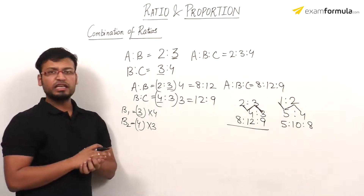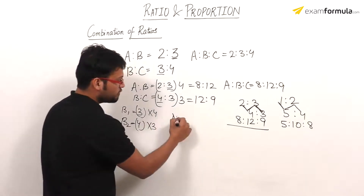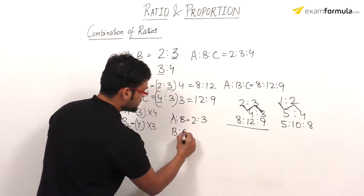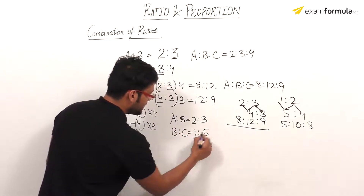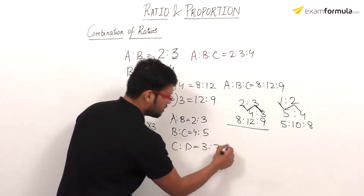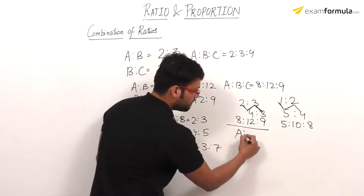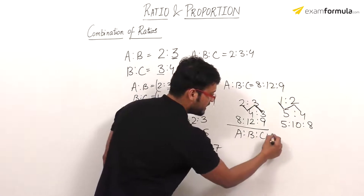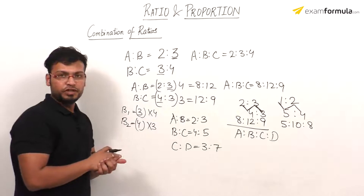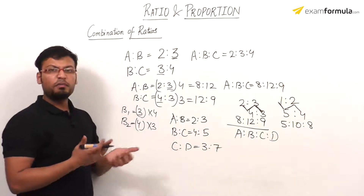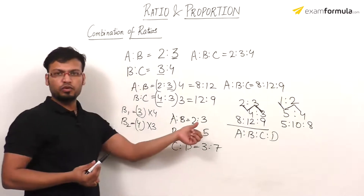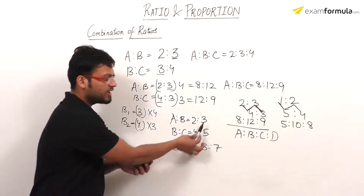Now I will give an example with 4 numbers. A ratio B is given as 2 ratio 3, B ratio C is 4 ratio 5, and C ratio D is 3 ratio 7. I am asked for the combined ratio A ratio B ratio C ratio D. Using the conventional method — equating particular values that are common in the equations using LCM — the LCM for B values (3 and 4) is 12.